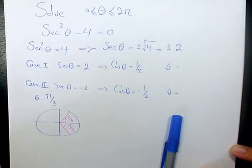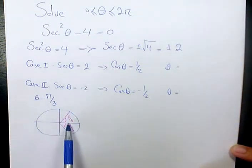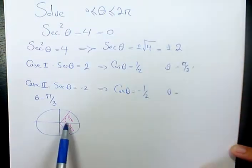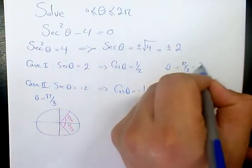So for case 1, I have pi over 3. And the second answer is going to be 2 pi minus pi over 3.